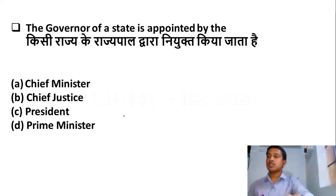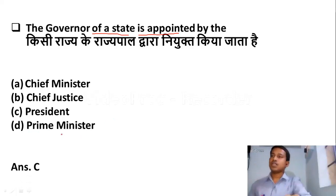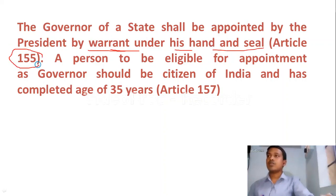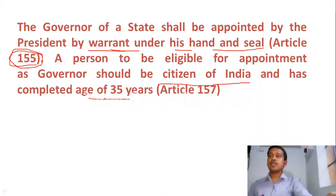The next question: the Governor of a state is appointed by — Option A: Chief Minister. Option B: Chief Justice. Option C: President. Option D: Prime Minister. The right answer is Option C — President. The Governor of the state shall be appointed by the President by warrant under his hand and seal, according to Article 155. A person eligible for appointment as Governor should be a citizen of India and should have completed the age of 35, according to Article 157.